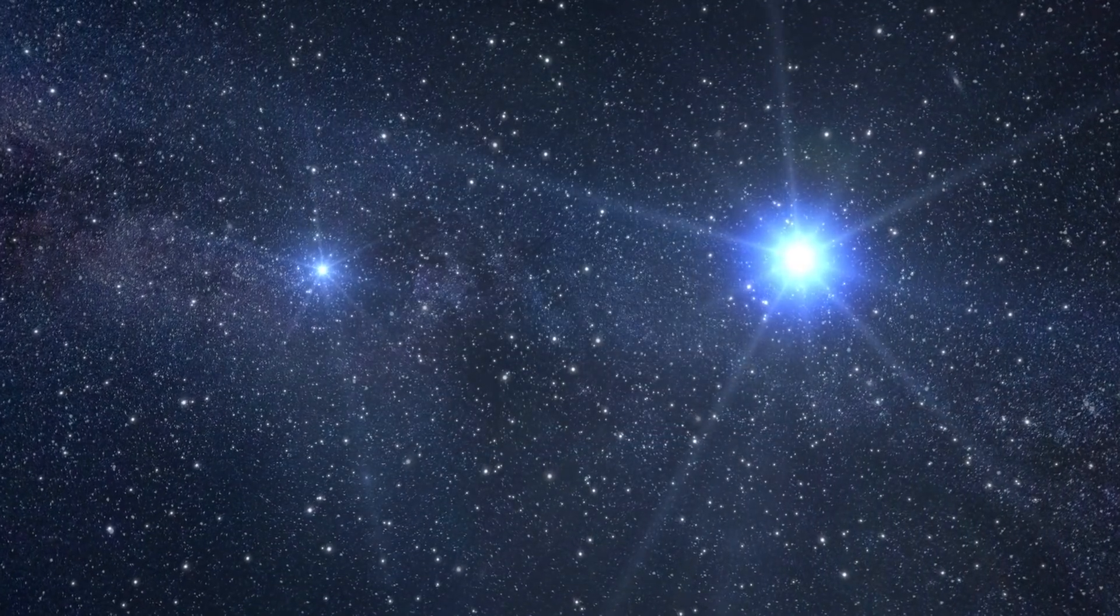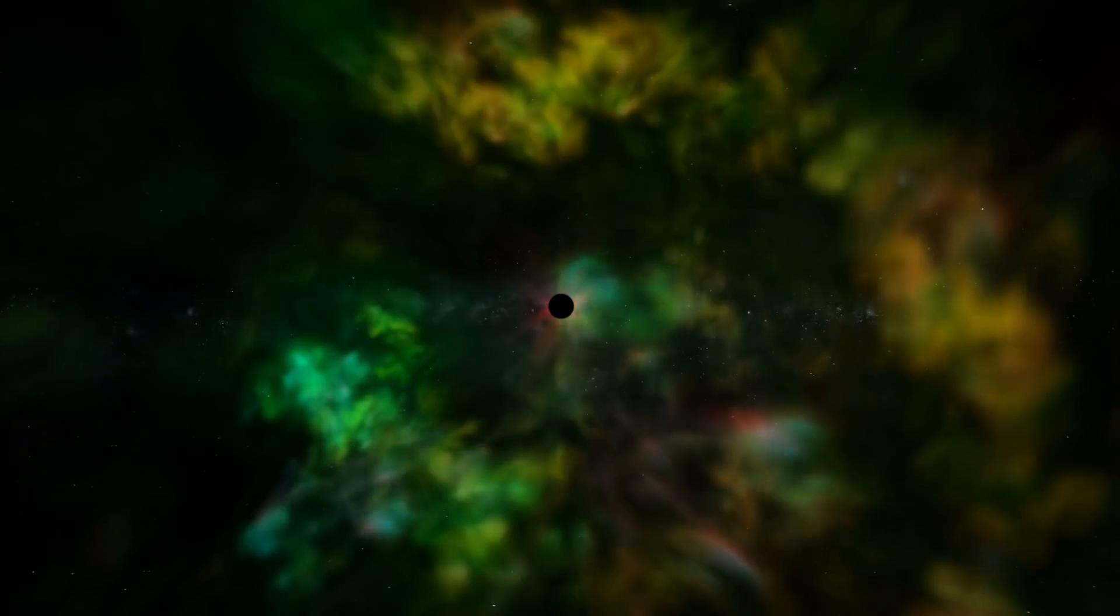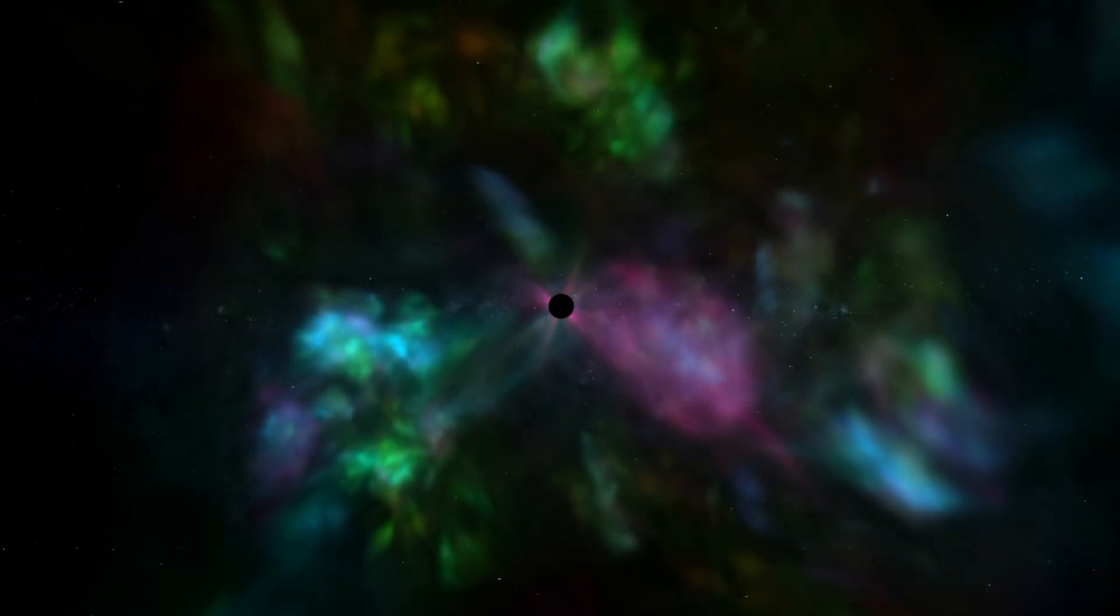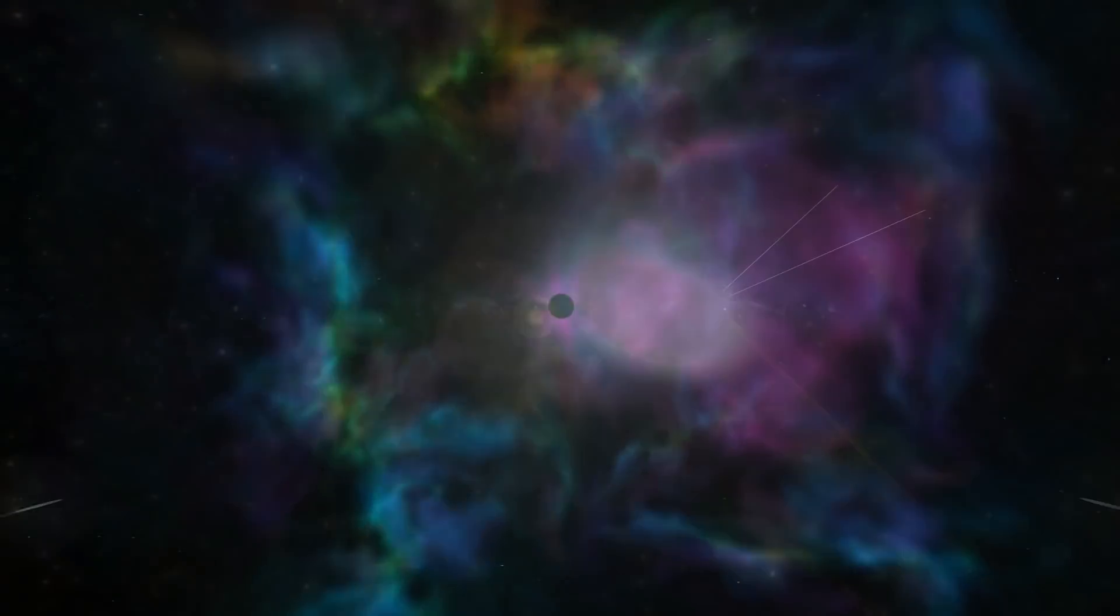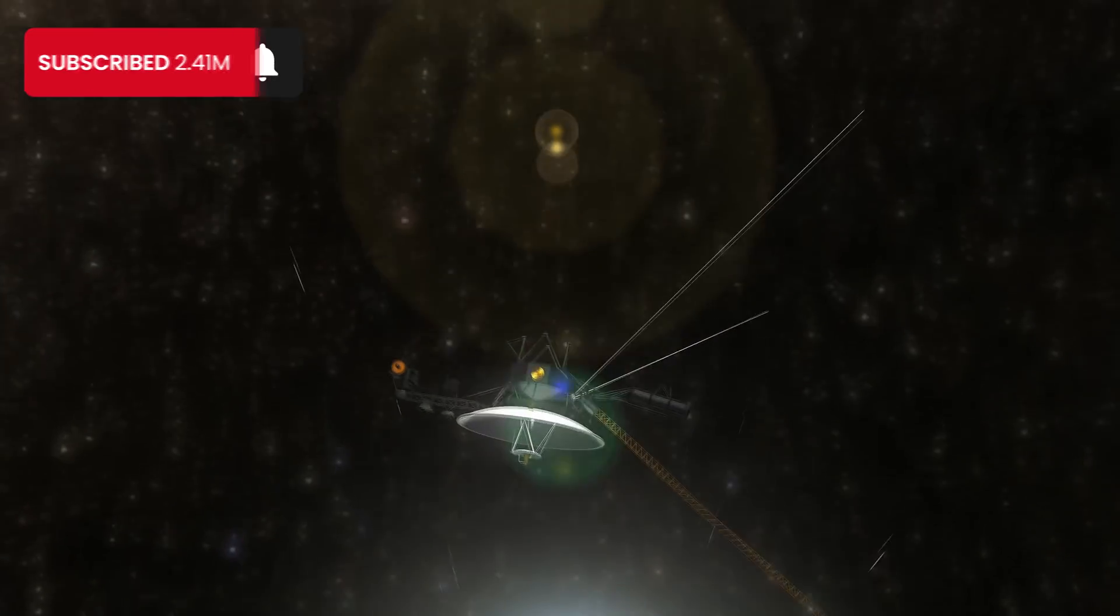Stellar tidal disruptions in a galaxy don't just happen once in a blue moon, but once every 10,000 to 100,000 years. So getting a good look at them is more than a little bit difficult. Only a few dozen have been observed since the first in 2014.